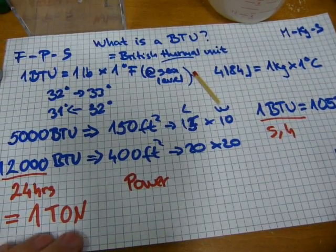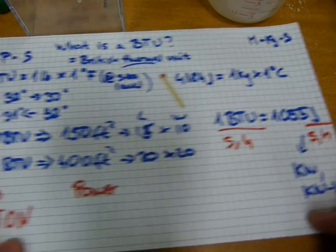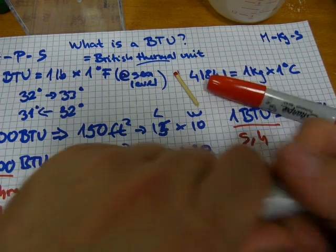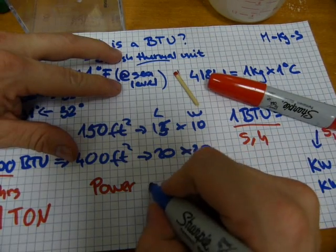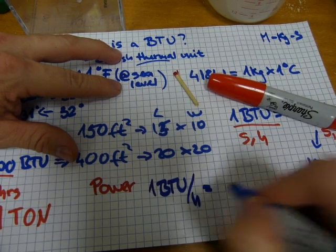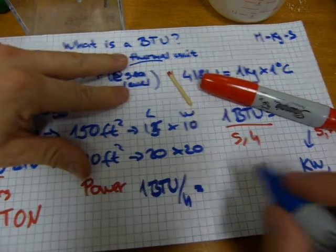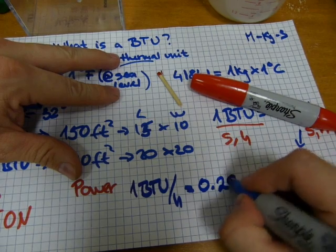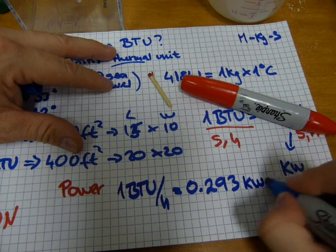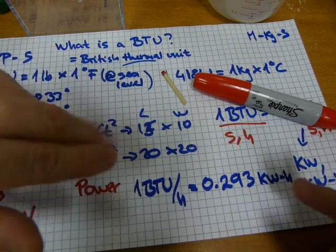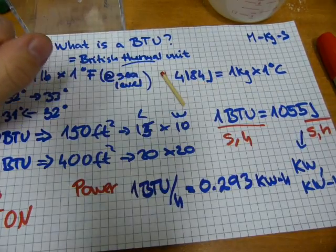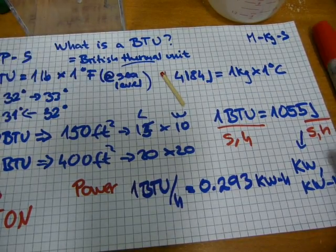Because the ton and the kilowatts are somewhat similar concepts, they also have an exchange rate, and one BTU per hour is exactly the same as 0.293 kilowatt-hours. So that's another exchange rate, and here are some numbers to get started with BTU calculations.